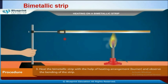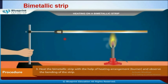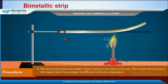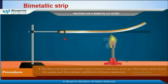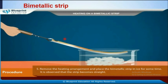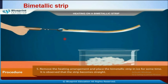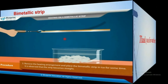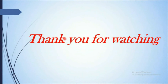Due to the difference in the thermal expansion coefficients of the metallic plates, the bi-metallic strip bends in one direction. When the burner or spirit lamp is removed and the bi-metallic strip cools, it eventually becomes straight again. Thank you for watching and see you in the next class.